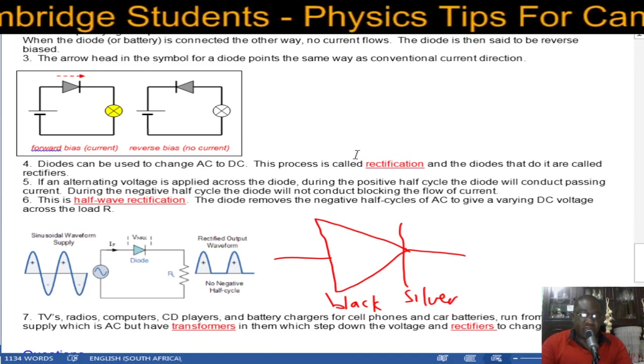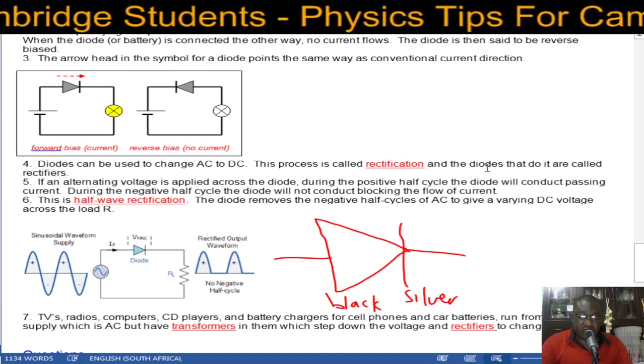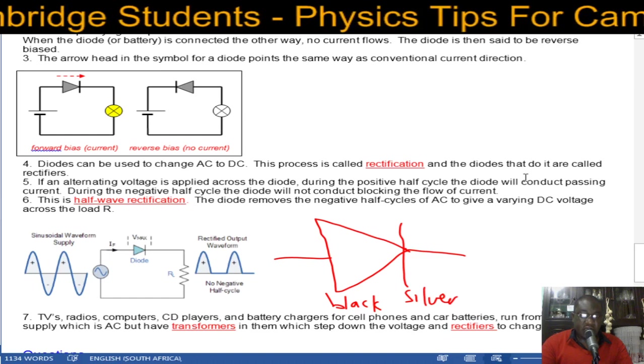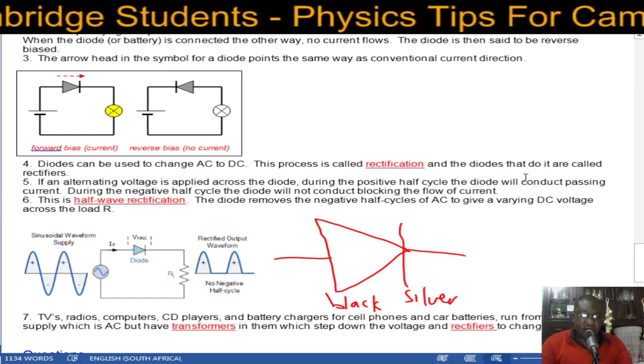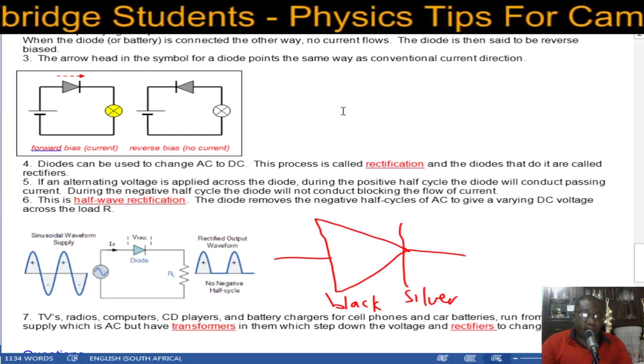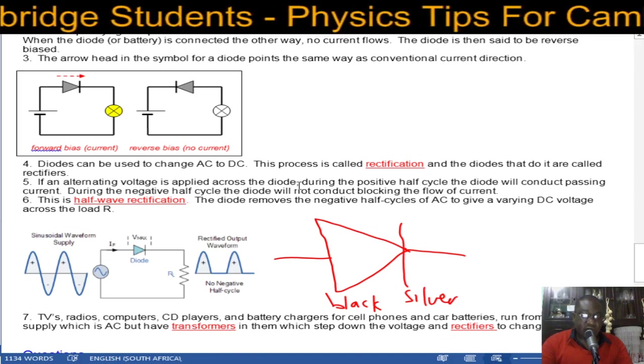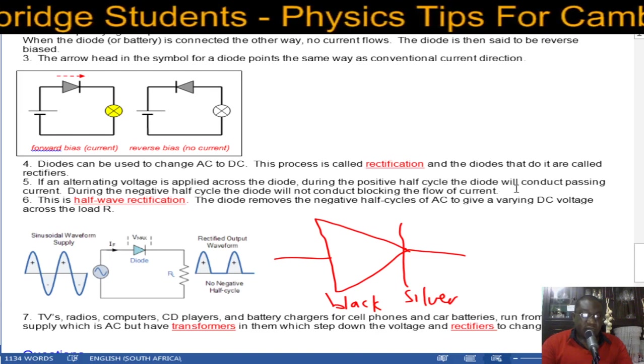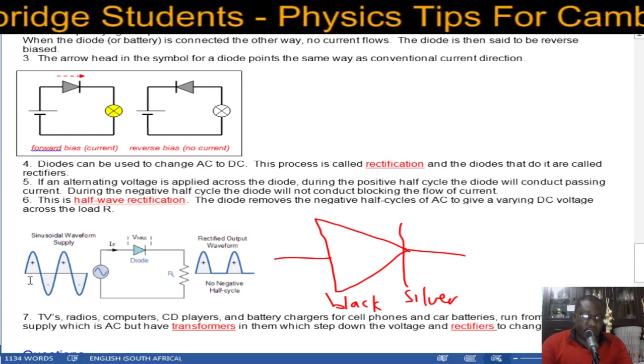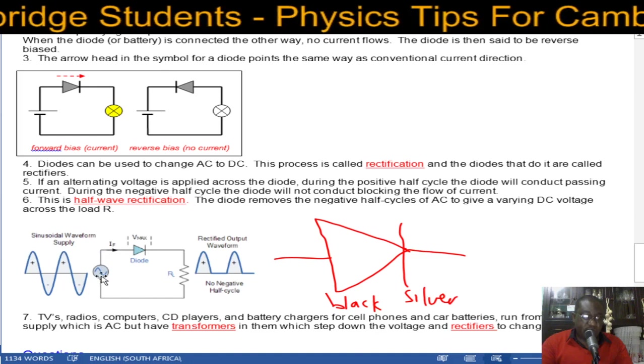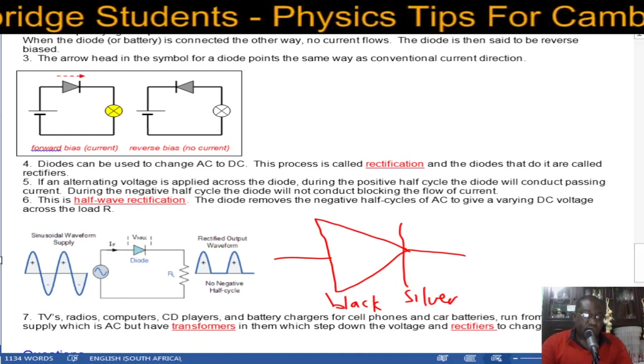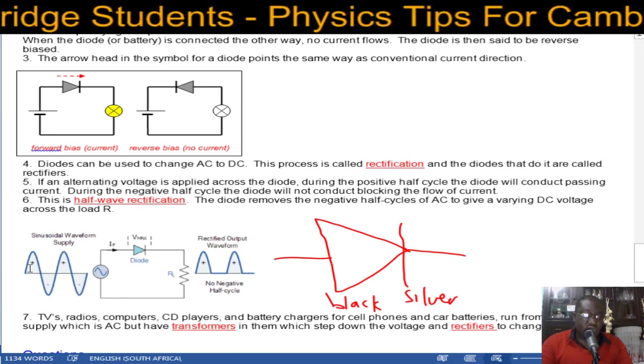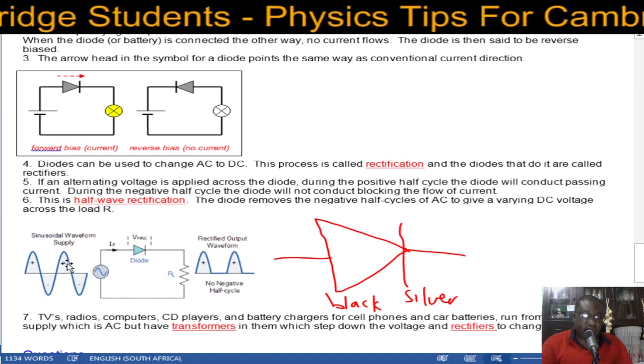The diode converts the AC to DC. The process of changing AC to DC is called rectification and the diodes that do this rectification are called rectifiers. If an alternating voltage is applied across the diode during the positive half cycle the diode will conduct passing current. So let's look at this. The input is an alternating voltage that is positive, negative, positive, negative.